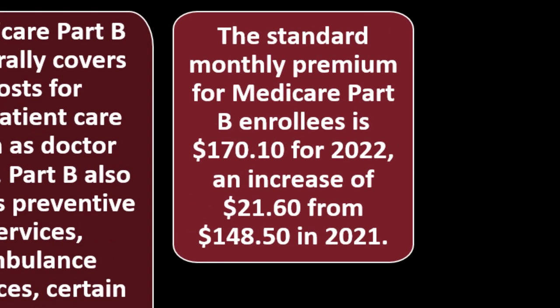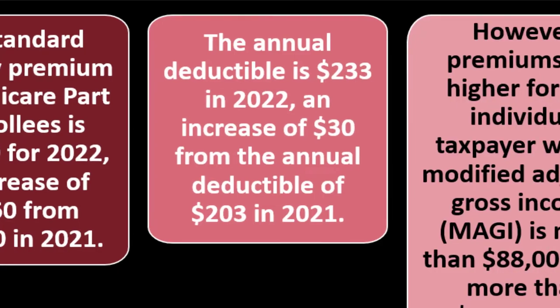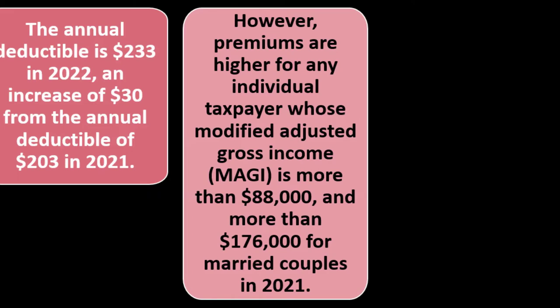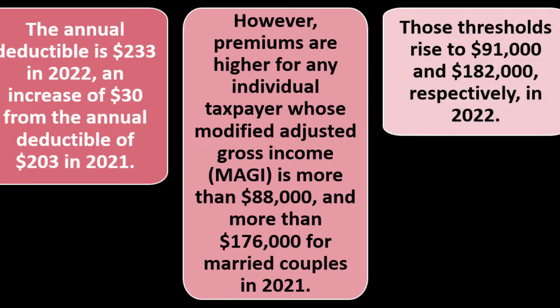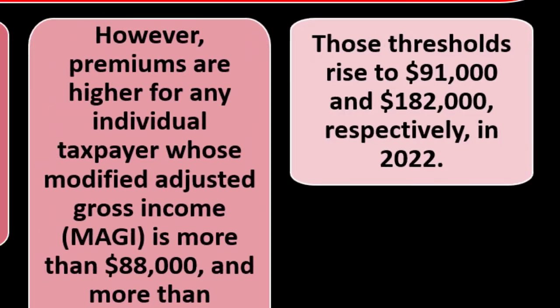The standard monthly premium for Medicare Part B enrollees is $170.10 for 2022, an increase of $21.60 from $148.50 in 2021. The annual deductible is $233 in 2022, an increase of $30 from $203 in 2021. However, premiums are higher for individual taxpayers whose modified adjusted gross income (MAGI) is more than $88,000 — or more than $176,000 for married couples in 2021. Those thresholds rise to $91,000 and $182,000 respectively in 2022.